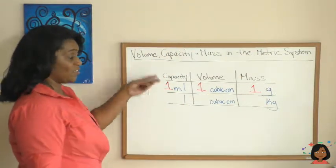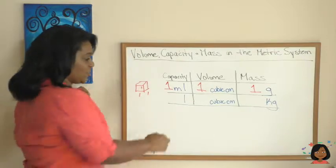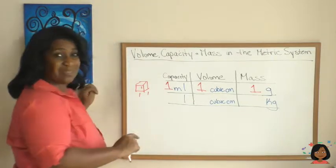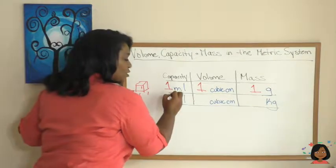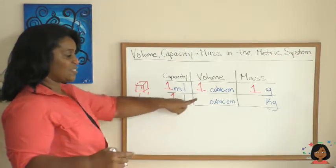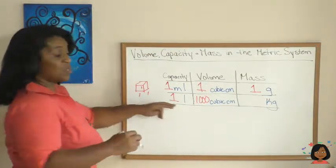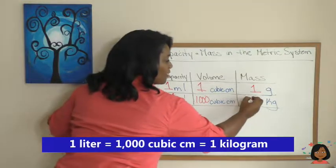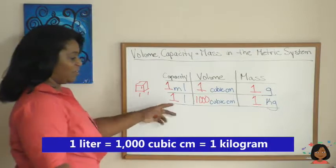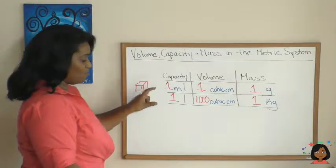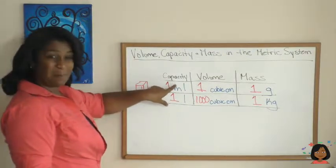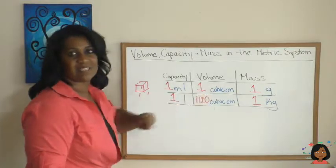Now, I could also use this to make some conversions. We know that there's a thousand milliliters in one liter. So one liter would have one thousand cubic centimeters and one kilogram, which by the way is a thousand grams. The reason these don't say a thousand is because we made the conversion already going from milliliters to liters and grams to kilograms.